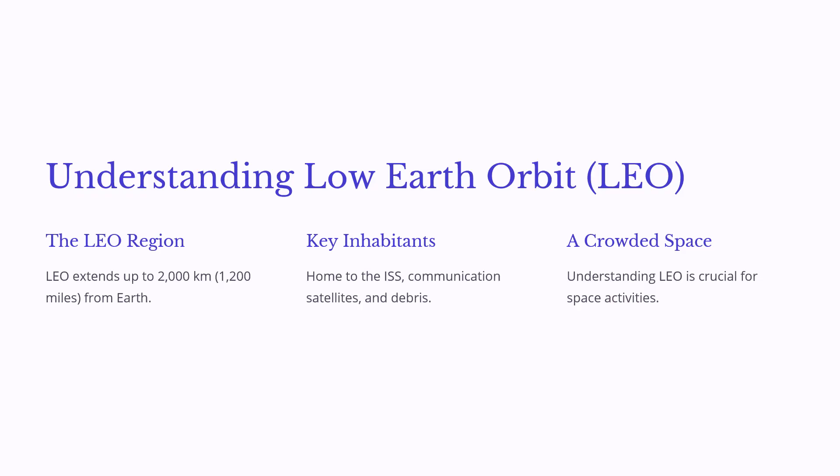Understanding low Earth orbit, or LEO. The LEO region extends up to 2,000 kilometers, or 1,200 miles, from the Earth. It's home to the ISS, communication satellites, and debris. It's a crowded space, and understanding LEO is crucial for space activities.